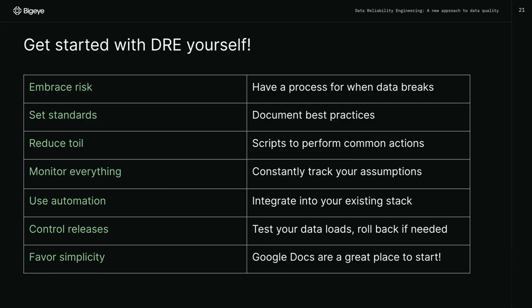I've set the standards, documented how I'm going to communicate, and I'm reducing the buttons I need to push. Monitor everything — just track your assumptions. Maybe you don't have to buy a data observability tool, but let's start with your assumptions. Every data set that you have, you make some sort of assumptions: how often it updates, how many records there should be. Ask your data consumers, ask your stakeholders — what's important about this data? Are you assuming email addresses are unique? Are you assuming prices can never be below zero? Start writing those down and tracking them. It can be manual to begin with, and then as you understand what assumptions make sense, start using automation.